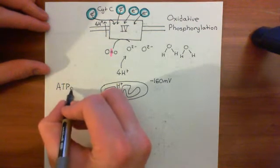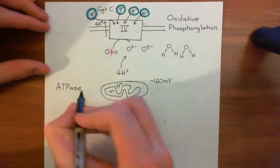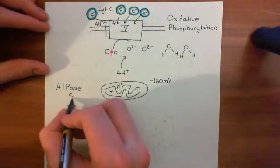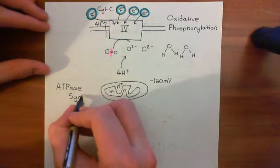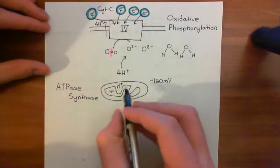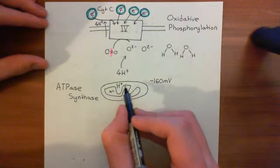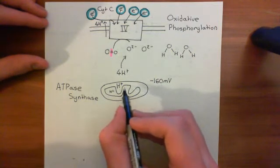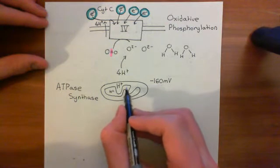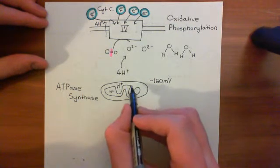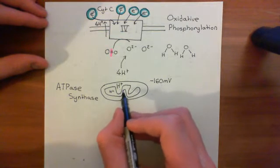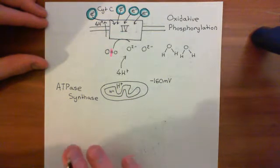Basically, wherever there's a force, there is potential for energy to be expended. So there is a huge protein complex within the inner membrane of the mitochondria. This is basically the only means by which protons are allowed to move from the intermembrane space back into the matrix. And when they do, they release a large amount of energy in going down the electrical potential gradient.